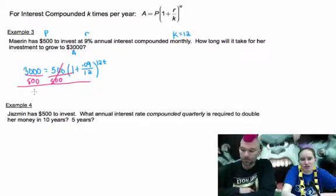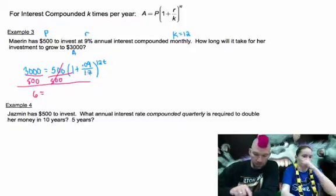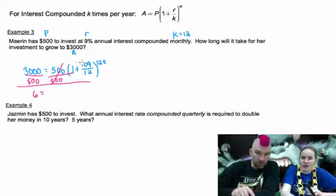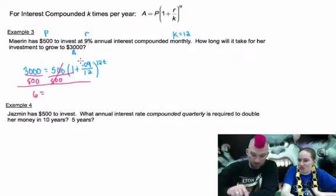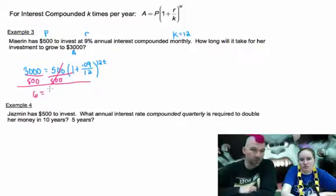So 3,000 divided by 500 is 6. And why don't we go ahead and do this? 1 plus 0.09 divided by 12. Okay, hold on. 3,000 divided by 500. No, you don't need to do that part. I already know that part. Oh, sorry. Do the parentheses. 1 plus 0.09 divided by 12. Divided by 12. I get 1.0075.